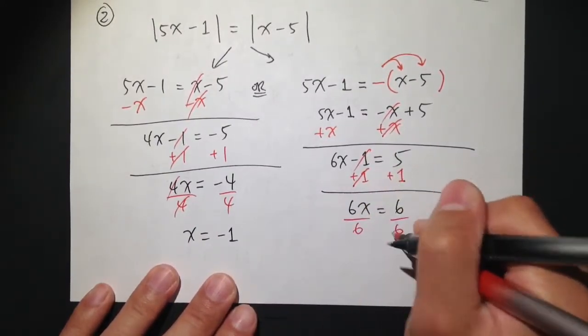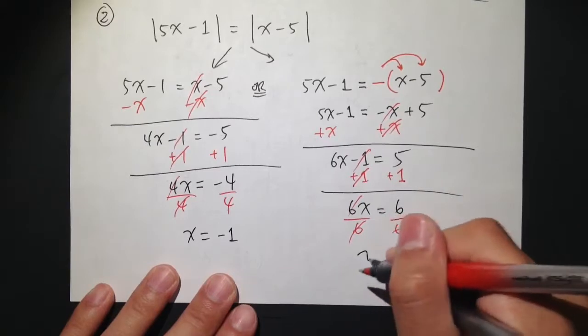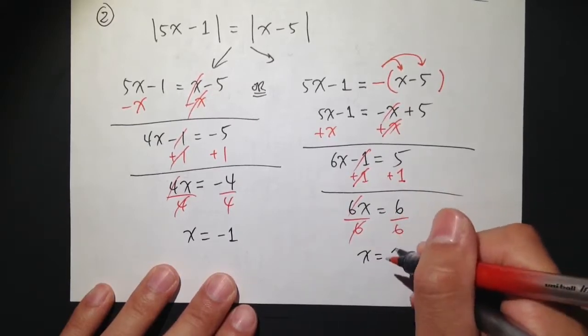Then divide both sides by 6, x is equal to 6 over 6, which is just 1.